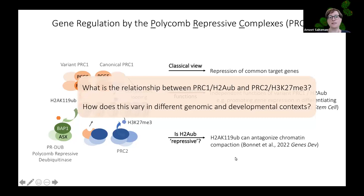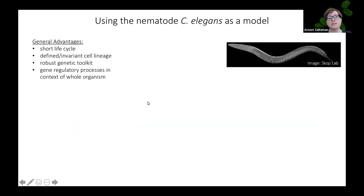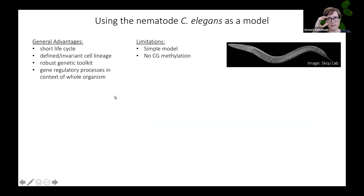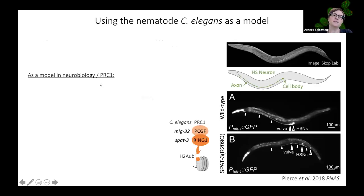To address these questions, we use the nematode C. elegans as a model. It has general advantages including a short life cycle, defined cell lineage, and a robust genetic toolkit, allowing us to study gene regulatory processes in a whole organism context. Limitations include its simplicity — it lacks extensive epigenetic machinery like CpG methylation, and the PRC complex is somewhat evolutionarily divergent compared to humans.